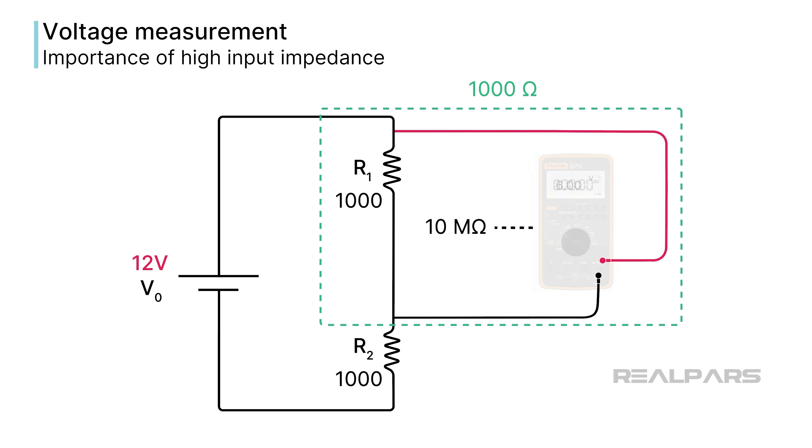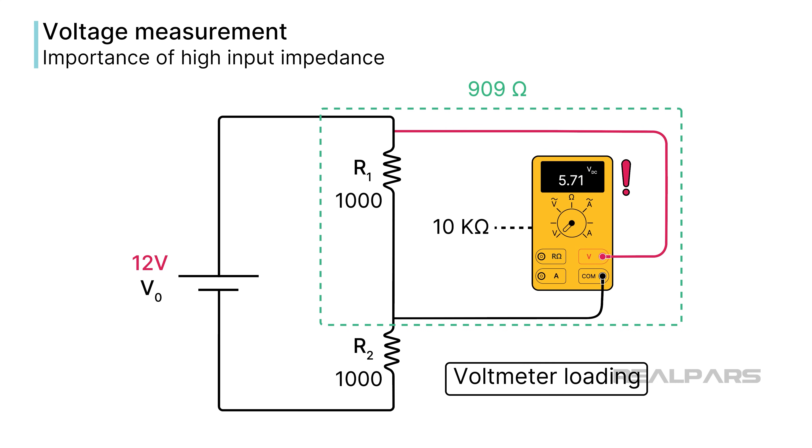But what if you have an inexpensive DMM with a low impedance value of 10,000 ohms? We won't mention any brand names here. The circuit characteristics will change because you have created a new parallel resistance value. Oops, now the reading is an incorrect 5.71 volts because of something called voltmeter loading.